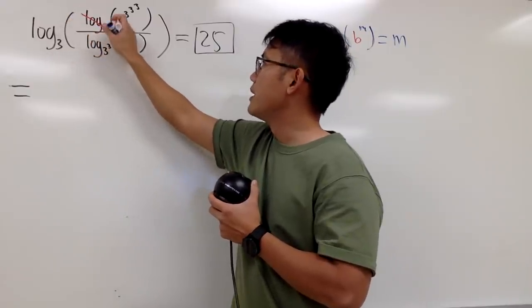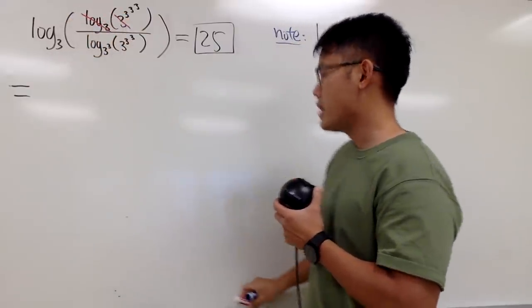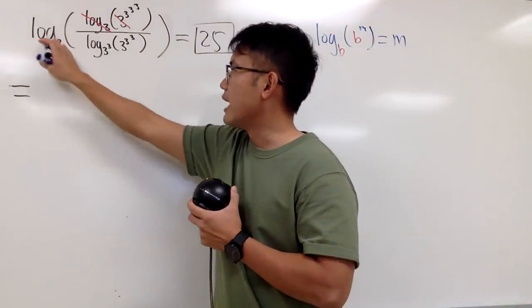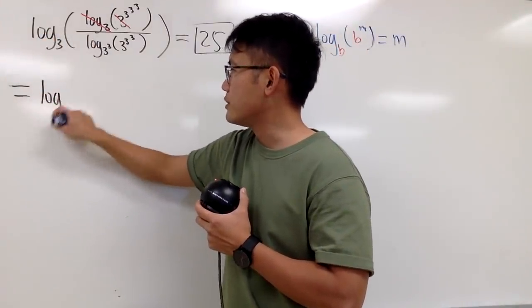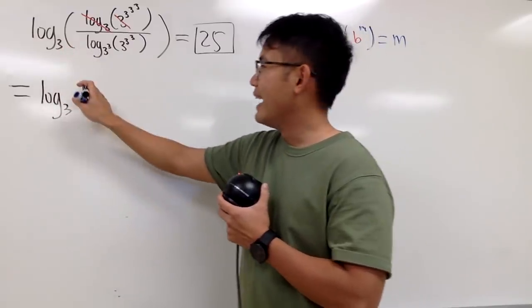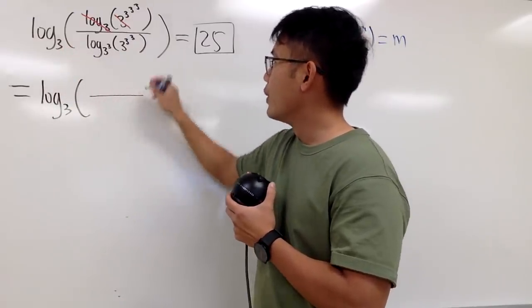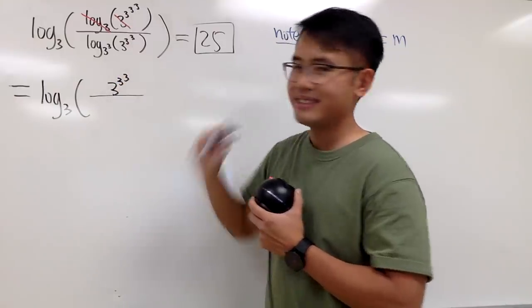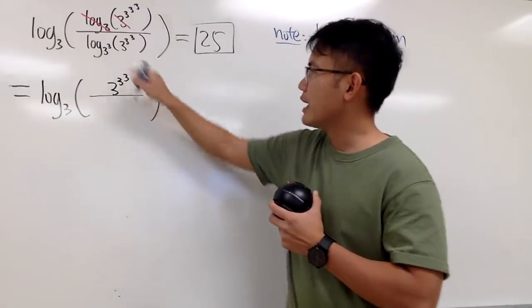So let's just write this down. We still have the log base 3 all the way in the front. And then on the top, we will have 3 to the 3 to the 3, like this. And then let's look at the denominator.